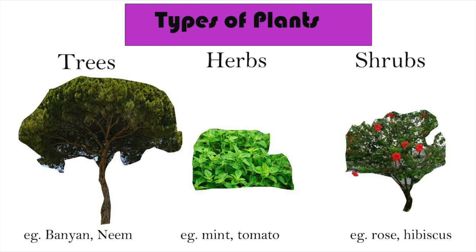Herbs are small plants with soft stems. Example: mint and tomato. Shrubs are medium-sized plants with woody stems, like rose and hibiscus.